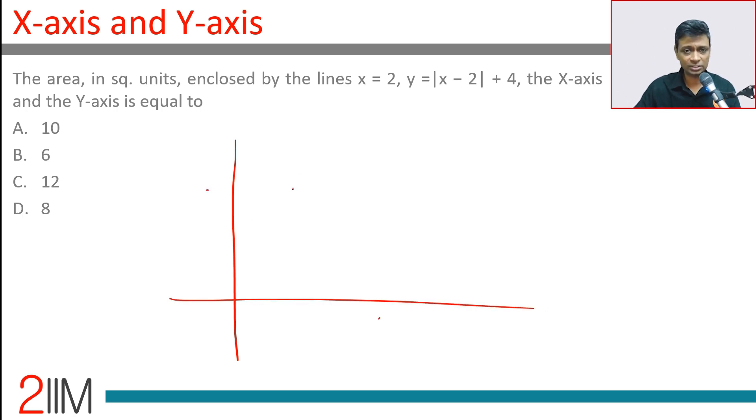X-axis is this, y-axis is this, x=2 is a line parallel to the y-axis. So we've got these three. We have the origin (0,0), x-axis, y-axis.